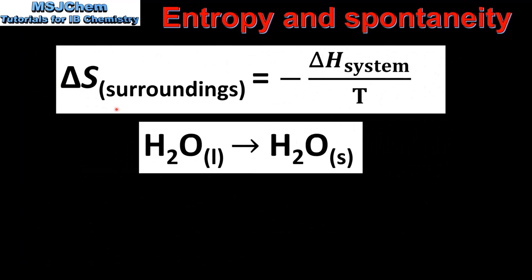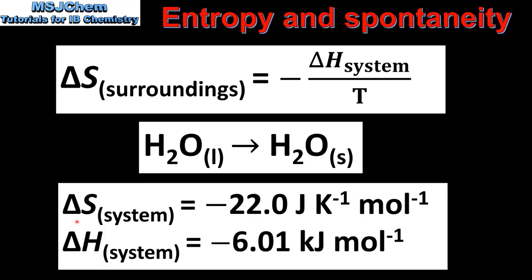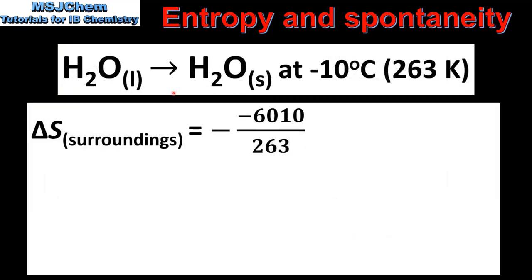We'll use this equation to calculate the total change in entropy for the freezing of water at two different temperatures. When water freezes, the change in entropy of the system is −22.0 J/K·mol. This is negative because solids have lower entropy than liquids. The change in enthalpy of the system is −6.01 kJ/mol, telling us that the freezing of water is exothermic. For our first example we'll calculate the total entropy change at −10°C, which is 263 K.